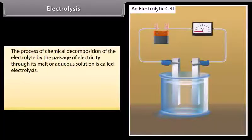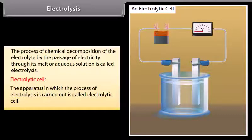Electrolysis: The process of chemical decomposition of the electrolyte by the passage of electricity through its melt or aqueous solution is called electrolysis. Electrolytic cell: The apparatus in which the process of electrolysis is carried out is called electrolytic cell.